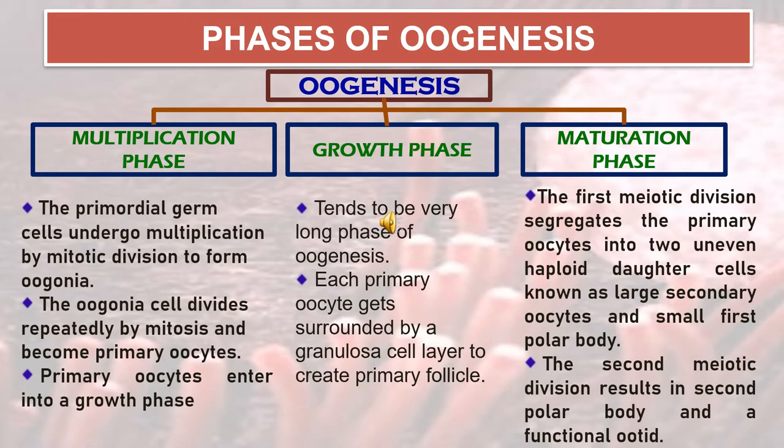In the multiplication phase, the primordial germ cells undergo multiplication by mitotic division to form oogonia. The oogonia cells divide repeatedly by mitosis and become primary oocytes. Primary oocytes then enter into a growth phase.